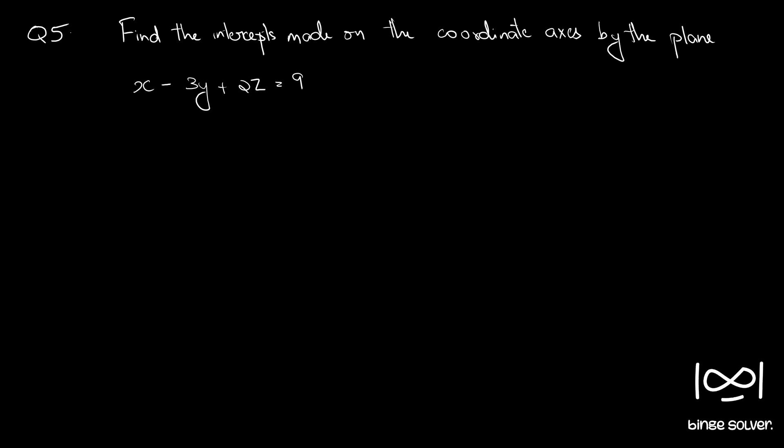We have already discussed what the intercept form of a plane is. Intercept form of a plane looks like something like this: x by a plus y by b plus z by c equal to 1. I have discussed this in the previous videos. Please do check the basic concepts video if you haven't already.